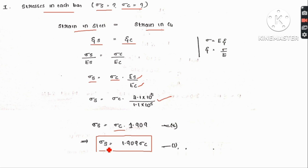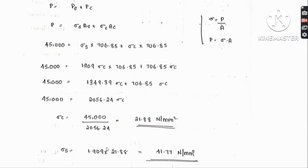From the strain compatibility condition, we can express sigma_c in terms of sigma_s. The second condition is that the total load equals the sum of individual loads: total load P equals load on steel plus load on copper tube, that is P equals P_s plus P_c.